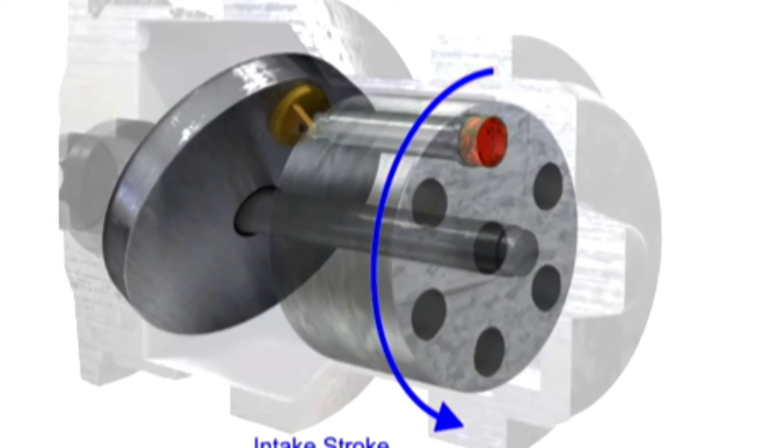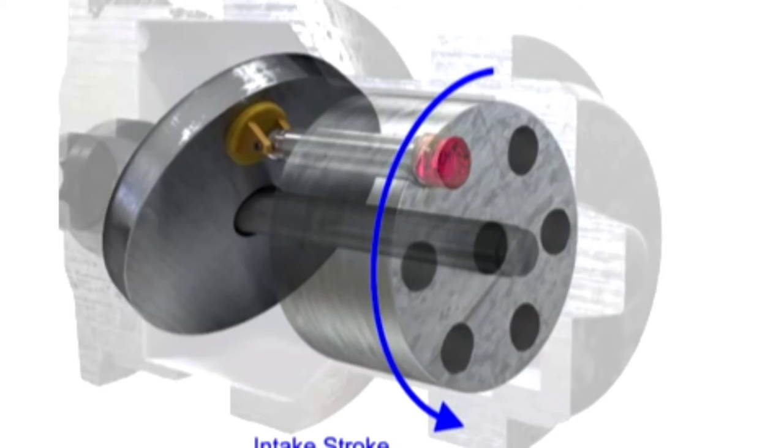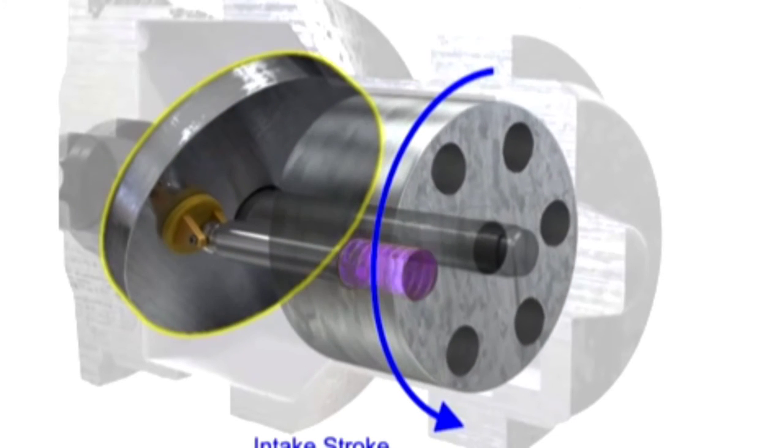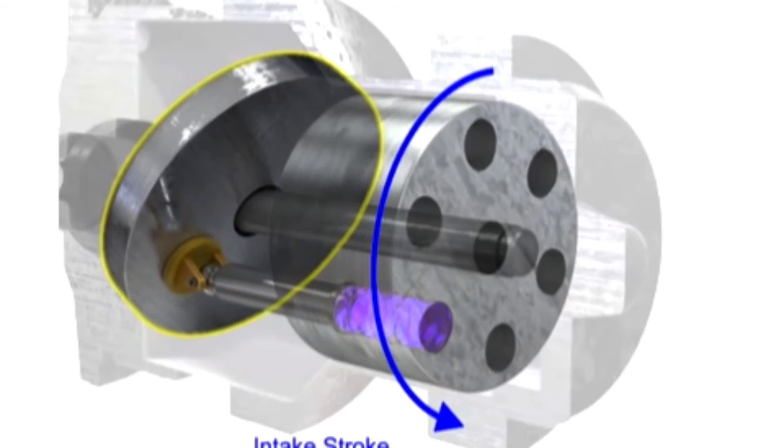On the intake stroke, a spring ensures the pistons pull back and maintain contact with the swash plate, causing fluid to fill the empty cavity left behind.